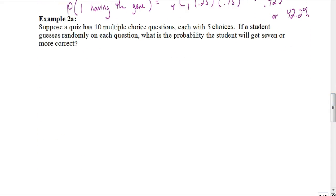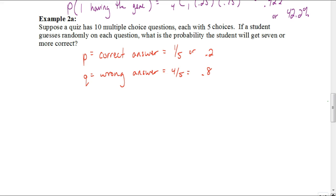Suppose a quiz has ten multiple choice questions, each with five choices. If a student guesses randomly on each question, what is the probability the student will get seven or more correct? A success would be guessing correctly — since there are five choices, you'd have a one in five, or 0.2, chance of that happening. A failure would be getting a wrong answer, which happens four out of five times, so a 0.8 chance. Since we're looking at getting seven or more — not just exactly seven — we're going to have to do this multiple times.